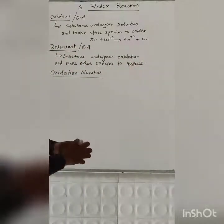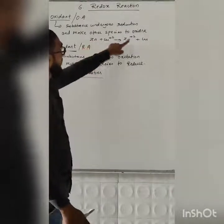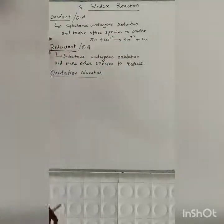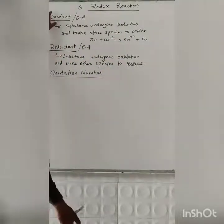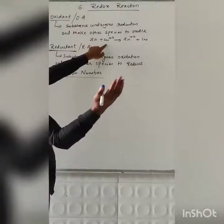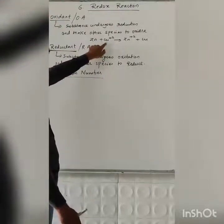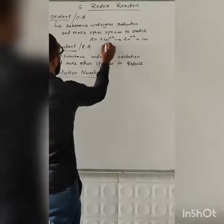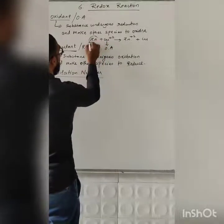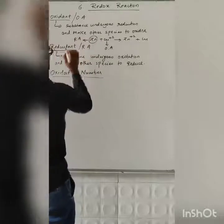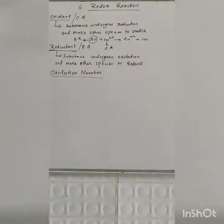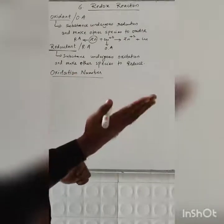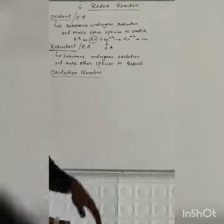What is a reductant? A substance that undergoes oxidation and makes other species get reduced. Here, Zn undergoes oxidation, meaning loss of electron, so Zn is the reducing agent. Oxidant means a substance which gains electrons — Cu²⁺ gains electrons and makes the other species oxidize, so copper is the oxidizing agent and zinc is the reducing agent. Oxidant and Oxidation are different: Oxidation means loss of electron; Oxidant means gain of electron.